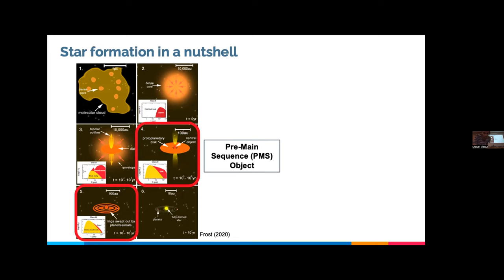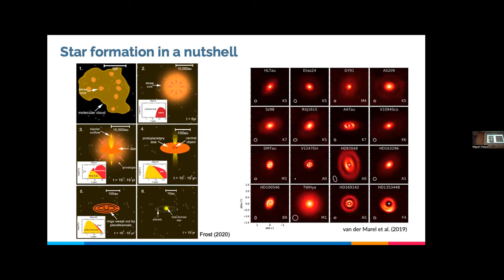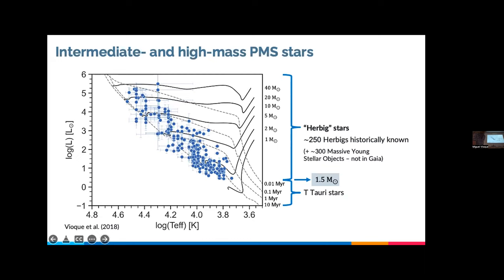We study pre-main sequence stars using a variety of techniques. For example, with ALMA millimeter wavelength observations of pre-main sequence objects of different masses, we can see their disks, study them, and see structure within those disks. We find that most disks we target with high resolution have structure, and in most cases we believe that structure is due to ongoing planet formation in those systems. Now, to make sure we're on the same page, let me define what I mean by intermediate and high mass pre-main sequence stars.